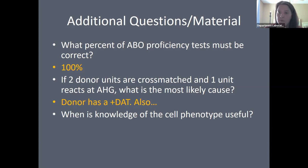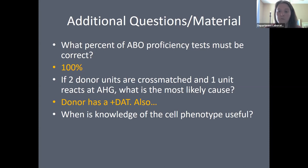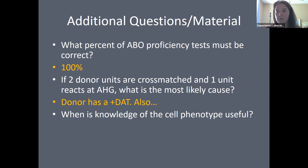When is cell phenotyping useful? If a patient has an identified antibody, you need to find antigen-negative, crossmatch-compatible donor red cell units — so you must phenotype those units. Additionally, when an antibody is identified, we want to confirm the patient is antigen negative, which further validates the antibody identification. Per Landsteiner's rule, in order to build the antibody, you must be antigen negative.